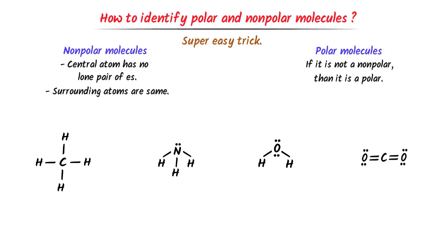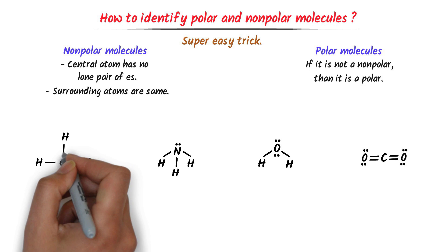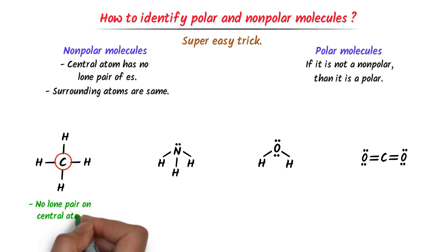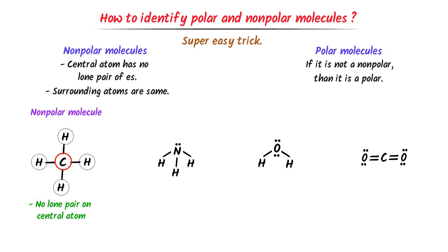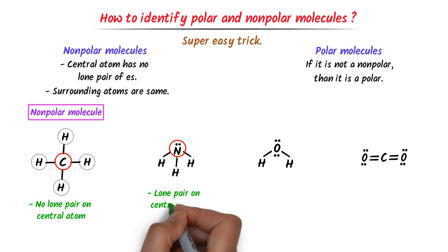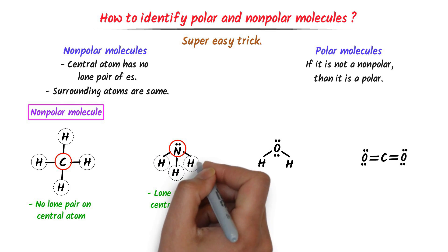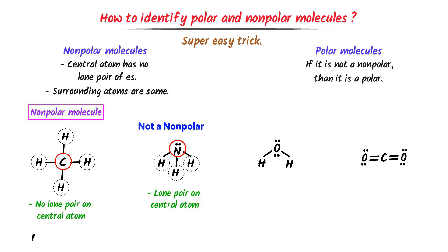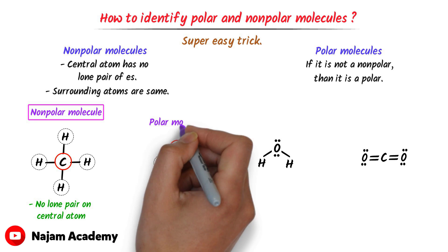For example, consider these molecules. Here, carbon is the central atom and it has no lone pair of electrons. Secondly, all the surrounding atoms are the same, so it is a non-polar molecule. In case of this molecule, nitrogen is the central atom. We can see that nitrogen has one lone pair of electrons, so the central atom has one lone pair of electron. The surrounding atoms are the same, but since it is not a non-polar molecule, it is a polar molecule.